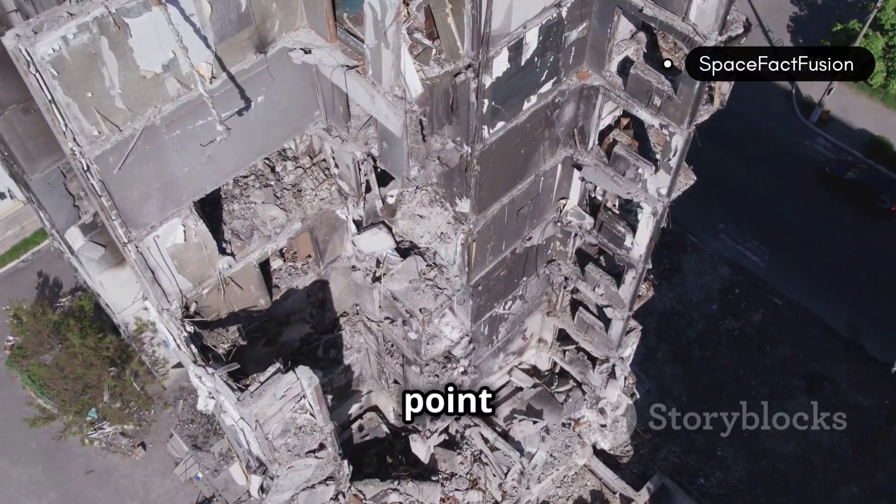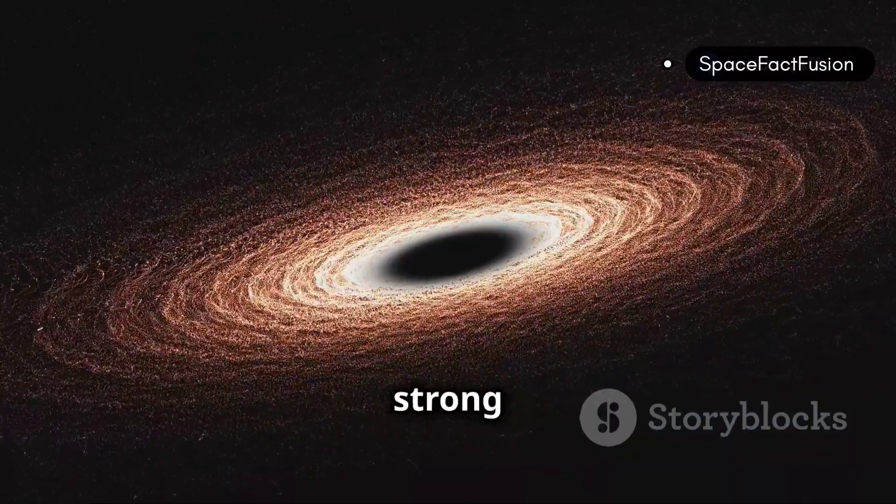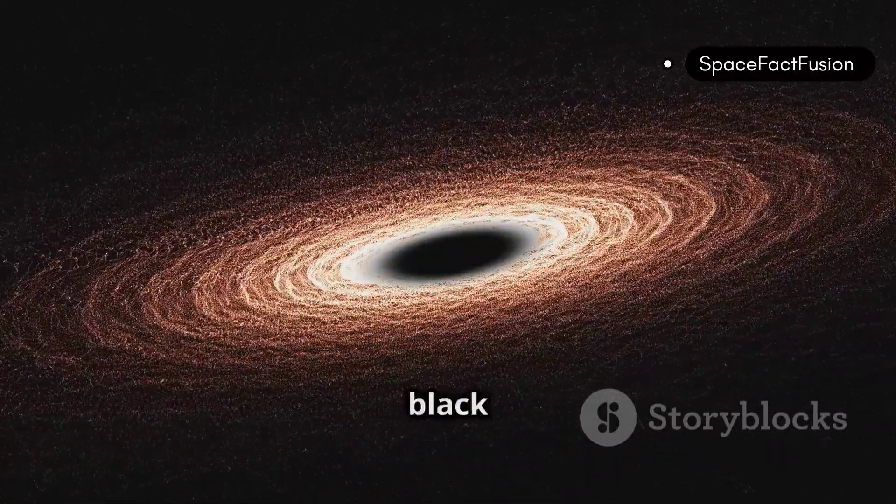The core of the star collapses, crushing itself into an infinitely small point called a singularity. The gravity at the singularity is so strong that it warps the fabric of space and time around it, creating what we call a black hole.